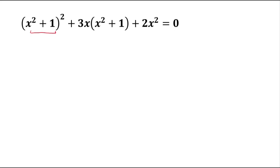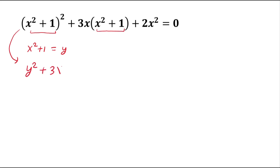Here we notice x² + 1 appears twice. If we substitute x² + 1 = y, then the given expression becomes y² + 3xy + 2x² = 0.